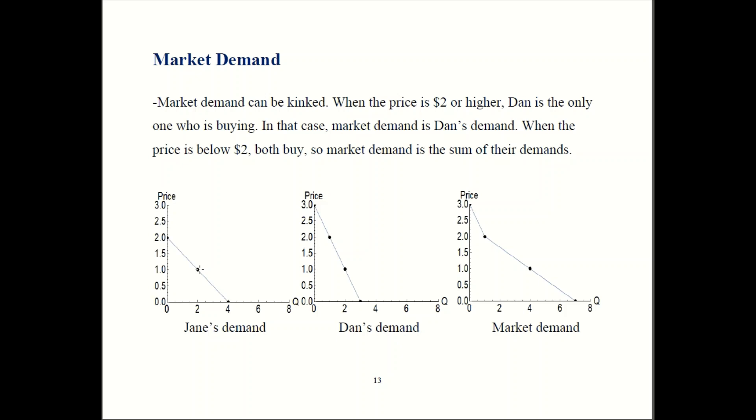Dan, however, is now going to buy one when the price is two and buy zero when the price is three. So for this top portion of the market demand, the price is between two and three, Dan is the only one buying. That means for this range of prices, market demand is Dan's demand. You can see this part of the demand curve is the same.